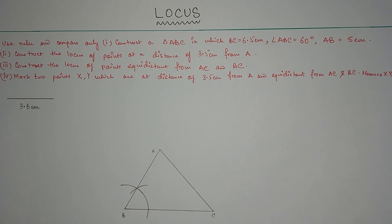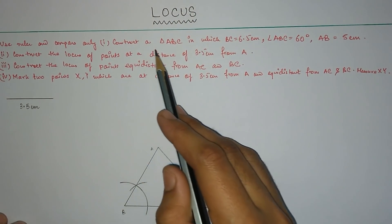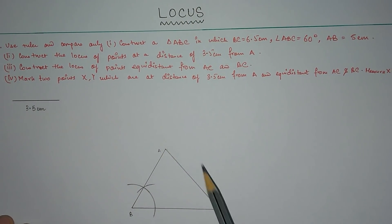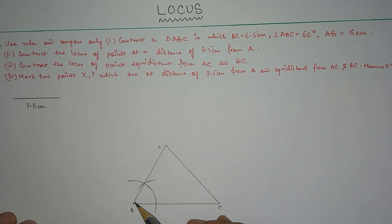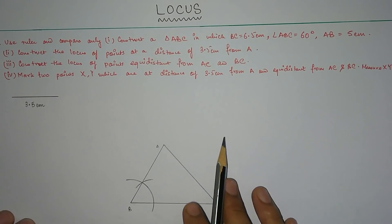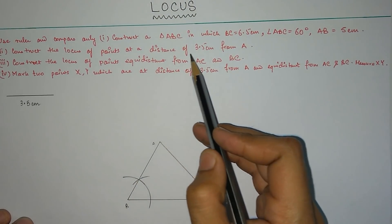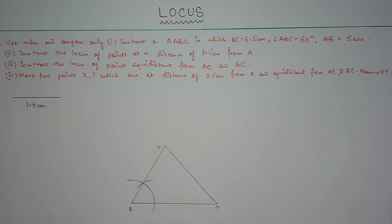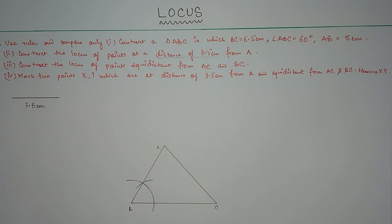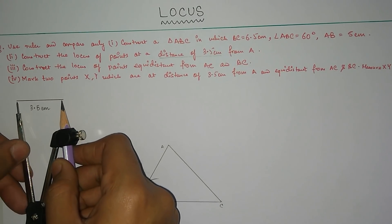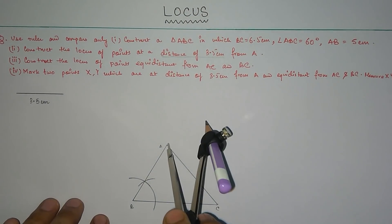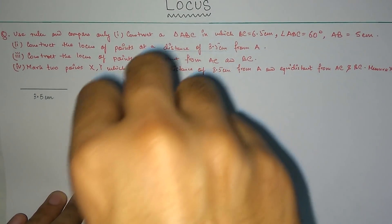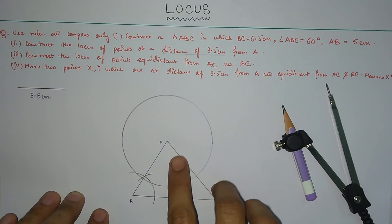Moving on to the final question of this video: using ruler and compass only, construct a triangle ABC in which BC is 6.5 cm, angle ABC is 60 degrees, and AB is 5 cm. The triangle has already been constructed with BC 6.5 cm, AB 5 cm, and angle ABC 60 degrees as stated. Number two: construct the locus of points at a distance of 3.5 cm from A. In the previous video I told you the locus of a point equidistant from a fixed point is a circle. The radius here is 3.5 cm, so I take a compass set to 3.5 cm, place it on A, and construct the circle.